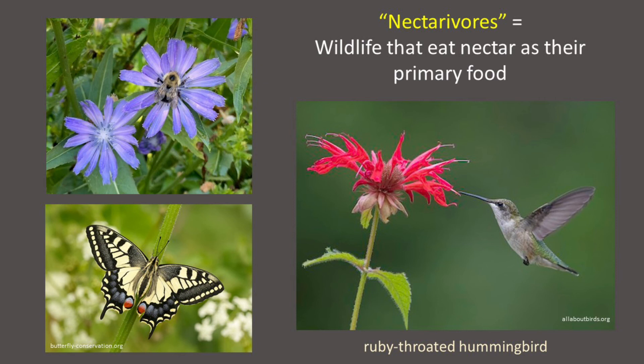Many birds and mammals, especially squirrels, incorporate nectar or tree sap into their diet. In other regions of the U.S., particularly the Southwest, bats are important nectarivores. But all of the bats in New England eat insects as their primary or sole food source.